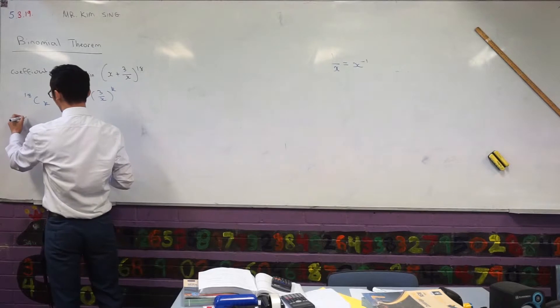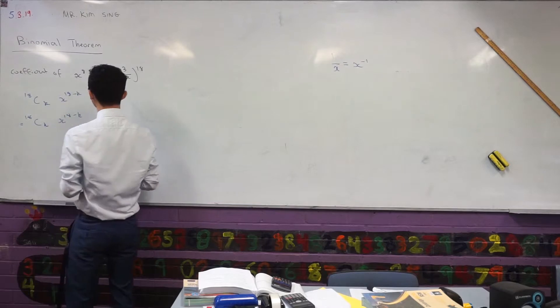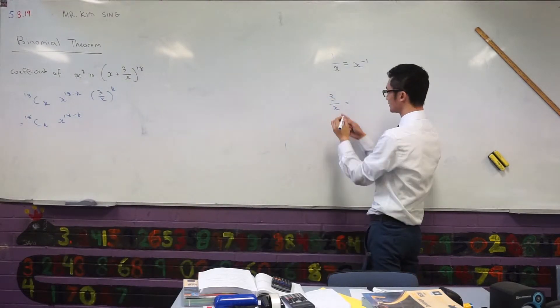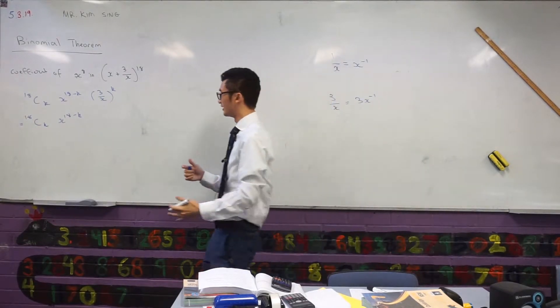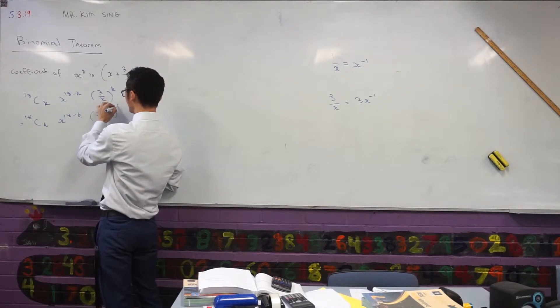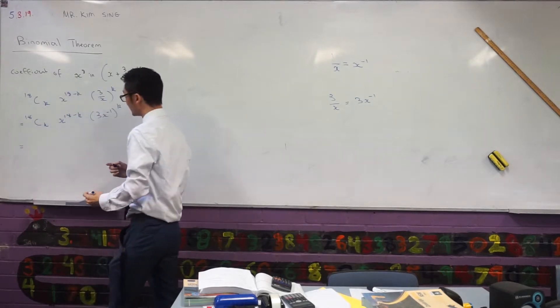This is 18 choose k, x to the power 18 minus k. Now 3 over x, well that 3 is on the numerator so that would just be 3x to the power negative 1. I've got 3x to the power negative 1. This way it becomes I guess a lot easier to start manipulating now because